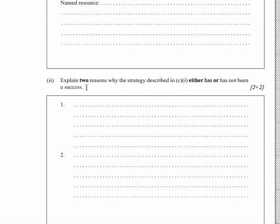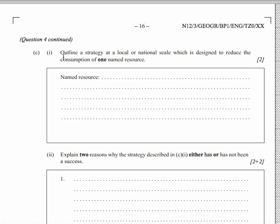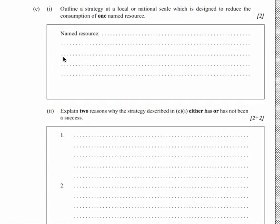The reasons why that strategy has worked need to be clearly linked with what you said in part C1. So it's that national or local policy, that named policy, that you talk about — and there must be a clear link between the two. If you say the natural resource is oil and you talk about the USA policy on reducing oil consumption, then go off and start talking about another resource or a different country, they're not going to let you have that.